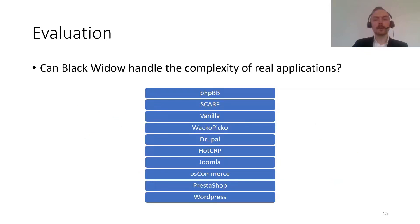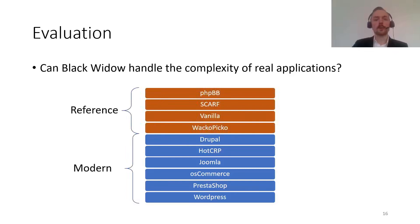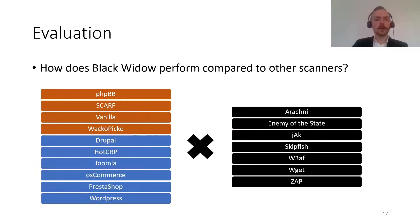We want to evaluate if Black Widow can handle the complexity of real applications. We look at both code coverage — the number of lines of code executed on the server side — as well as the number of vulnerabilities detected, across 10 different web applications. We divide these into reference applications running old versions with known vulnerabilities that have been used in previous papers, allowing comparison, and six modern applications running the latest versions — including WordPress, PrestaShop, Drupal, HotCrab, and others. We compare Black Widow with seven other scanners: Arachne, Enemy of the State, Jack, Skipfish, and Wget (used only for coverage comparison since it is not a vulnerability scanner).